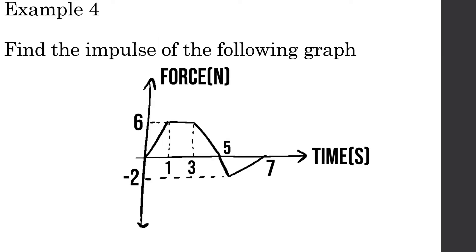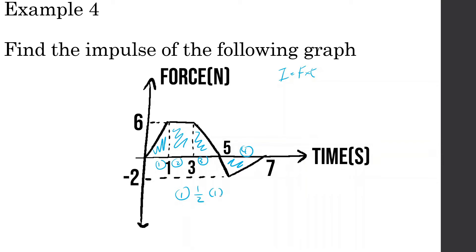It says find the impulse of the following graph. One thing we should know when doing impulse is that impulse equals force times time. So if we find the area under the curve, that gives us the impulse. That's something key to know with the calculus — the area under the curve. So let's figure out what area 1 is. Area 1 is going to be one-half base, which is 1, times height, which is 6, so this will be 3.